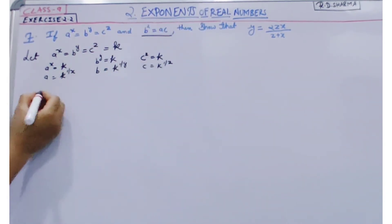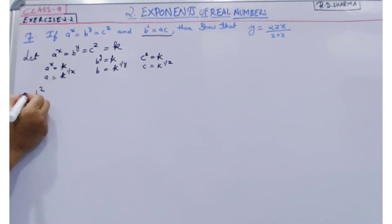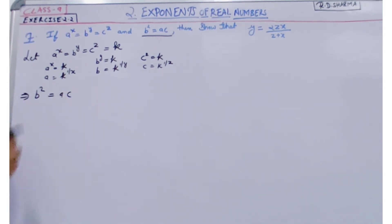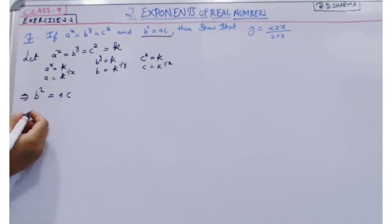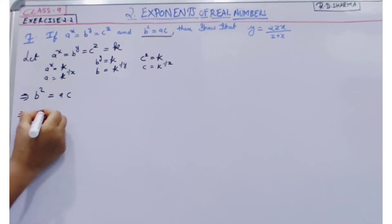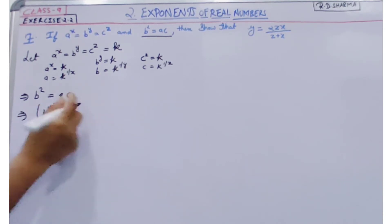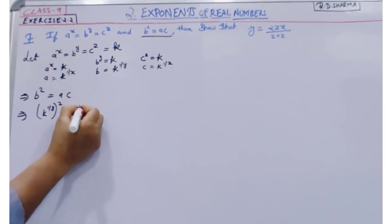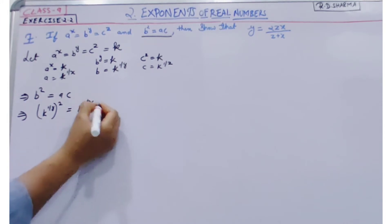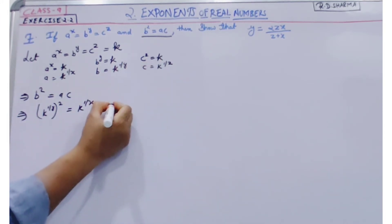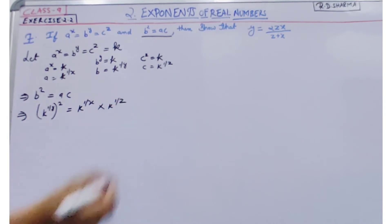Now here b square is equal to ac. So we substitute the value of b here: k to the power 1 by y, whole square, is equal to the value of a — k to the power 1 by x — multiplied by the value of c — k to the power 1 by z.